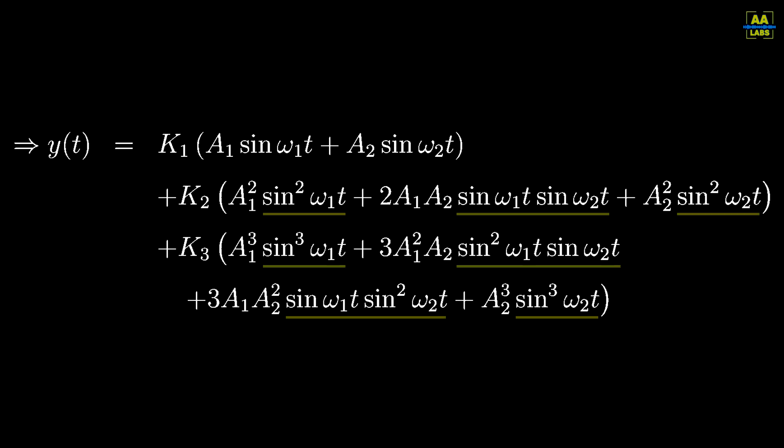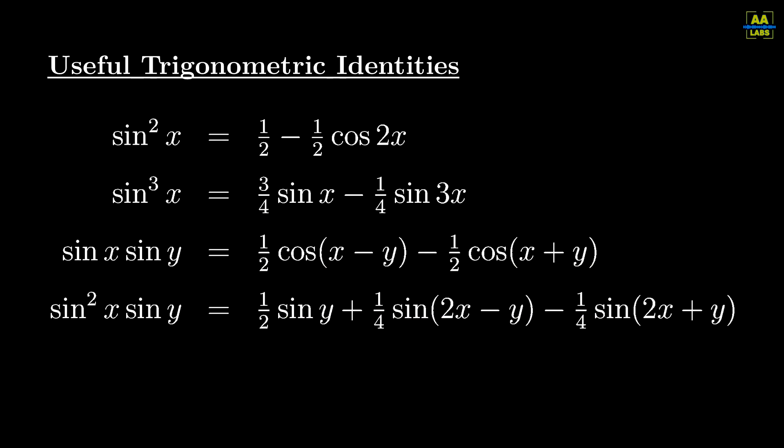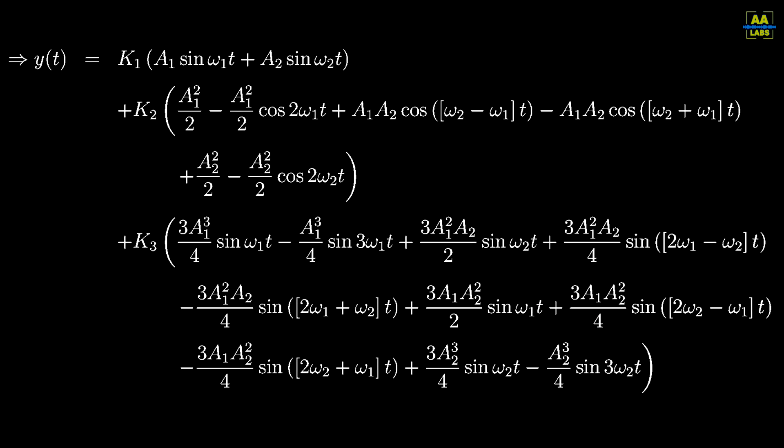We can use trigonometric identities to understand the sine squared, sine cubed, and sine multiplied by sine functions. And if we apply the identities, we get this absolute mess.